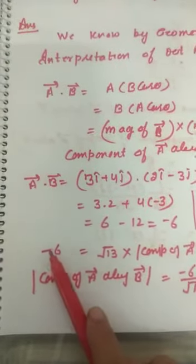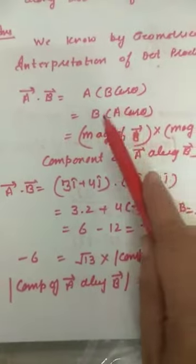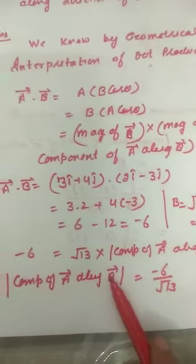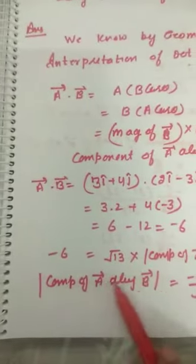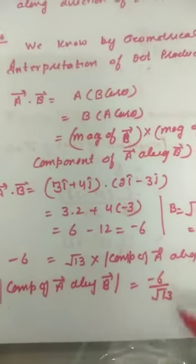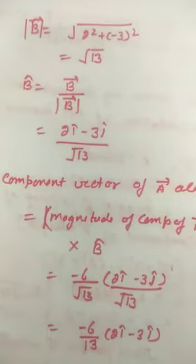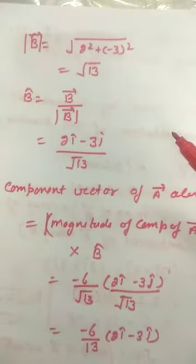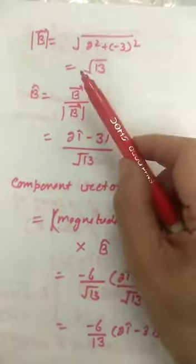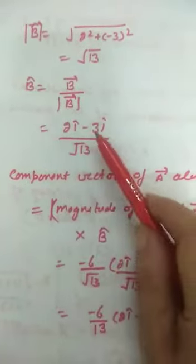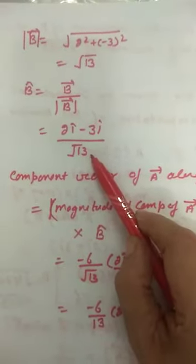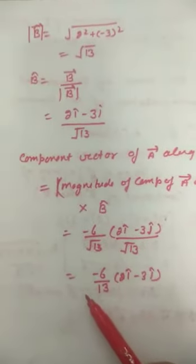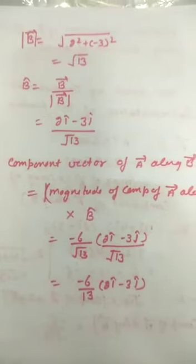So vector a dot vector b equals b times (a·cosθ), meaning the component of vector a along vector b has magnitude minus 6 divided by root 13. But that is only the magnitude — we need the vector. To get the vector, we multiply this magnitude by the direction of vector b. So we find the unit vector of vector b, which is vector b divided by the magnitude of vector b. Multiplying this unit vector by the magnitude gives us the required component vector of vector a along vector b.